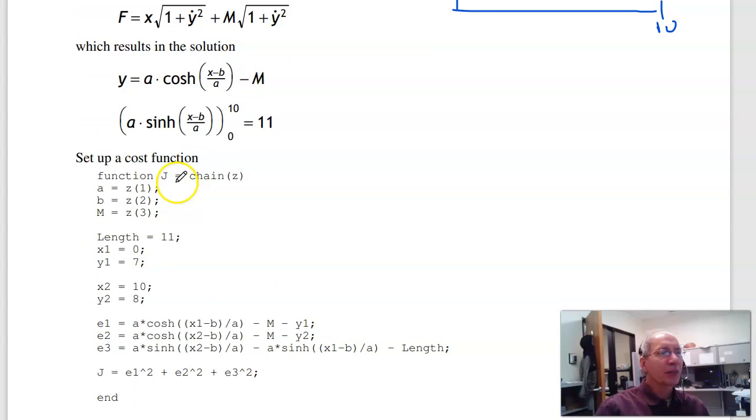So creating a function in MATLAB to solve. Again, these are nasty nonlinear equations, hard to solve by hand, MATLAB comes to the rescue. I'm going to guess a, b, and m. At the left endpoint, this equation has to be satisfied. When x=0, y=7. At the right endpoint when x=10, y=8. And the length is eleven, so evaluate this between the two endpoints minus eleven equals zero.